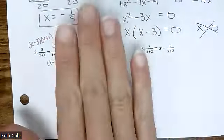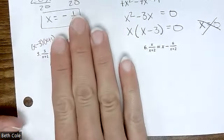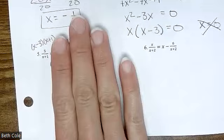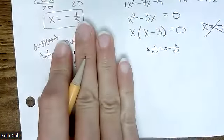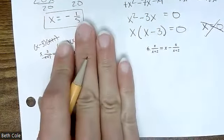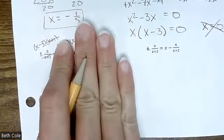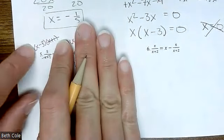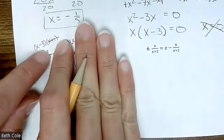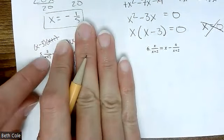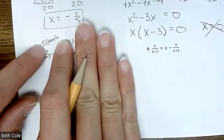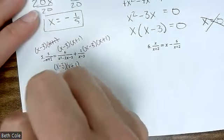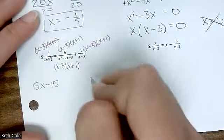When you look at the first one, what cancels? Cancel those. So what's still there? You can see what's still there. You have to distribute the five, so that'll be five X minus 15.